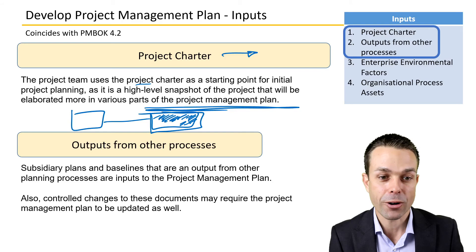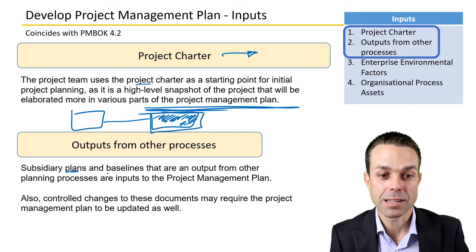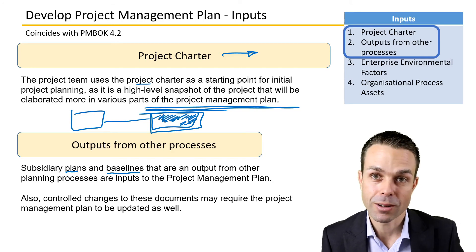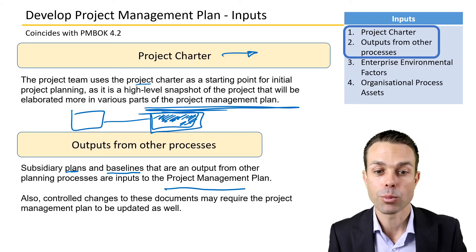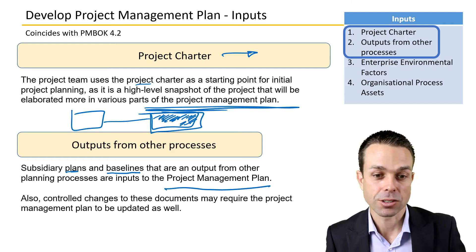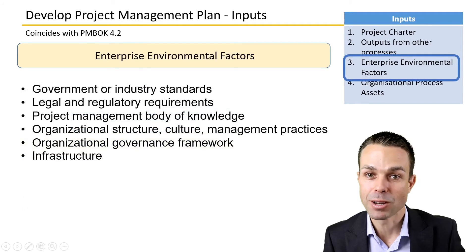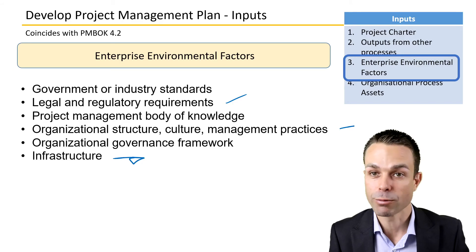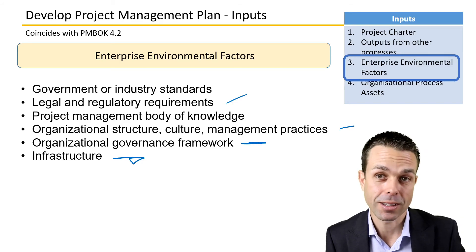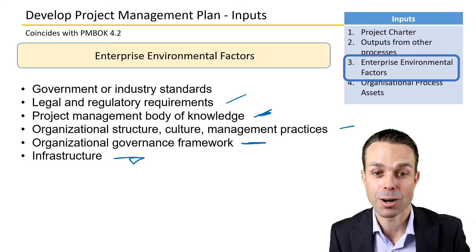Outputs from other processes — subsidiary plans such as the risk plan, quality plan, schedule plan, and cost plan — and any baselined documents also go into the project management plan. Controlled changes to these documents may require updates to the project management plan as well. Enterprise environmental factors include legal regulations, organizational structure, the infrastructure you're working in, and organizational governance frameworks.